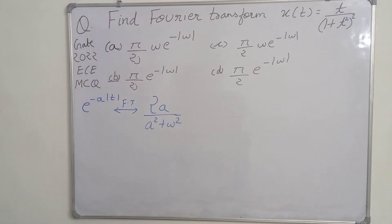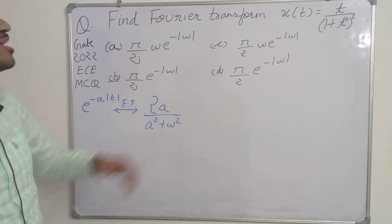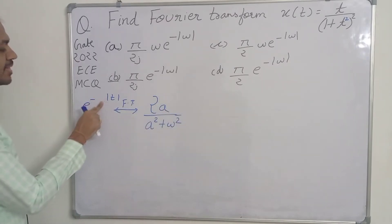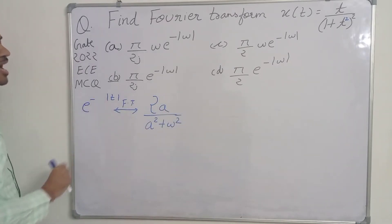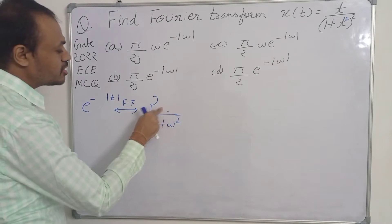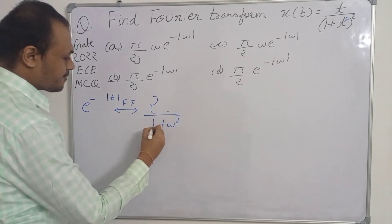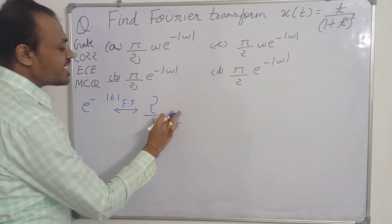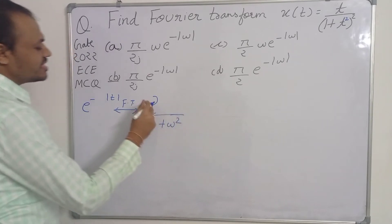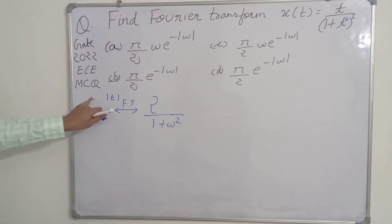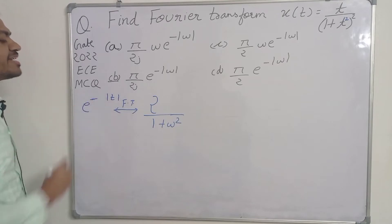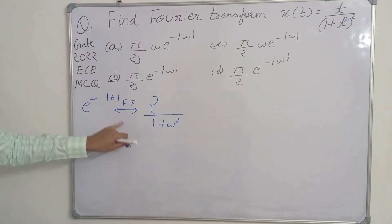So e^(-a|t|) has Fourier transform 2a / (a² + ω²). Now if we replace a with 1, we get the Fourier transform of e^(-|t|) as 2 / (1 + ω²). By replacing a with 1 we got this result, and now we have e^(-|t|) on the time-domain side.